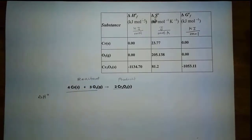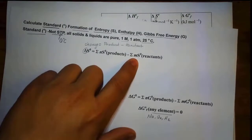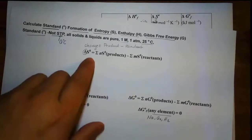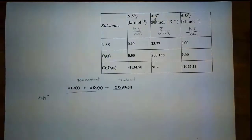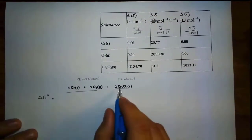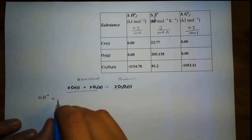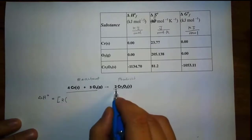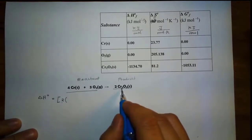Notice how we have the letters N and M — those are the coefficients, the number of moles. The number of moles will affect the total as well. So for delta H, let's look at the product.